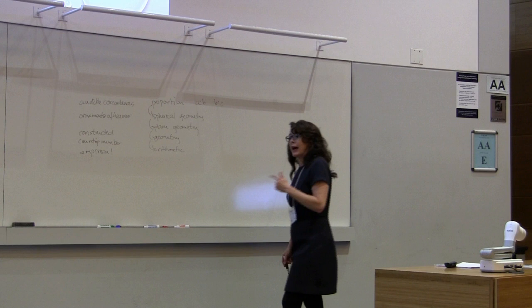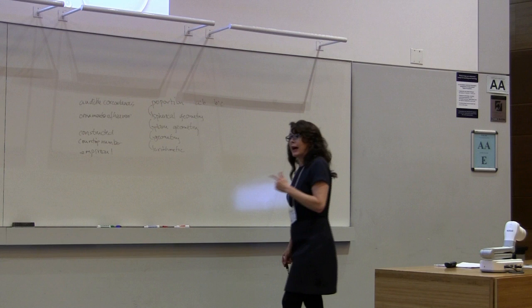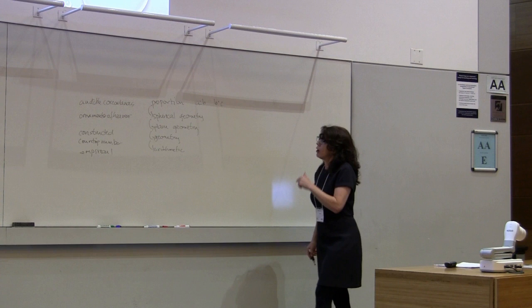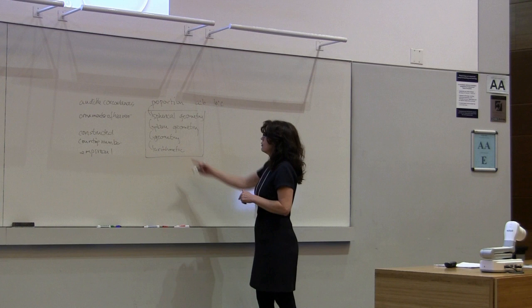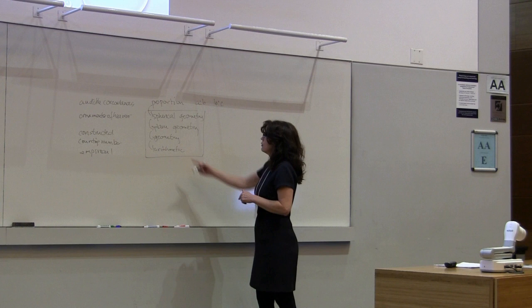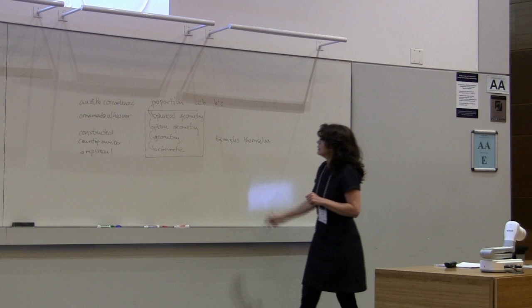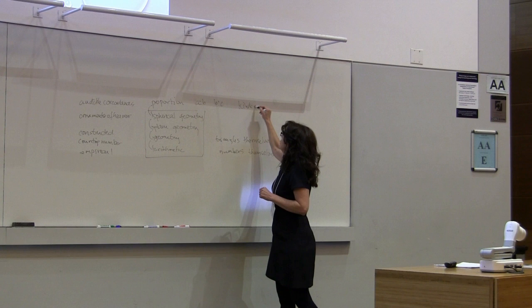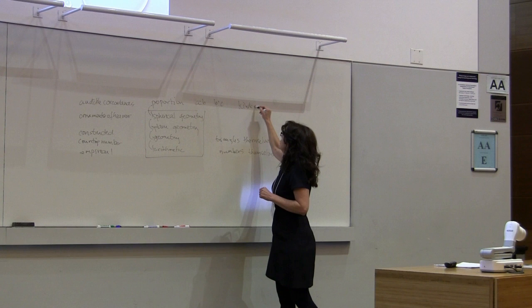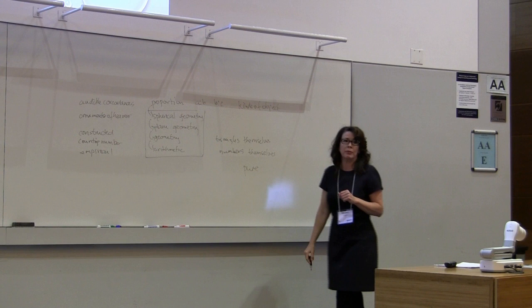The theory of proportion — remember that second question: what is it that allows us to speak about these kinds of objects? What I'm arguing is that the theory of proportion is what allows us to speak about these objects. So it allows us to speak about, for example, geometrical objects or triangles themselves, and it allows us to speak about numbers themselves. These are the kinds of objects of pure mathematics as opposed to empirical mathematics.